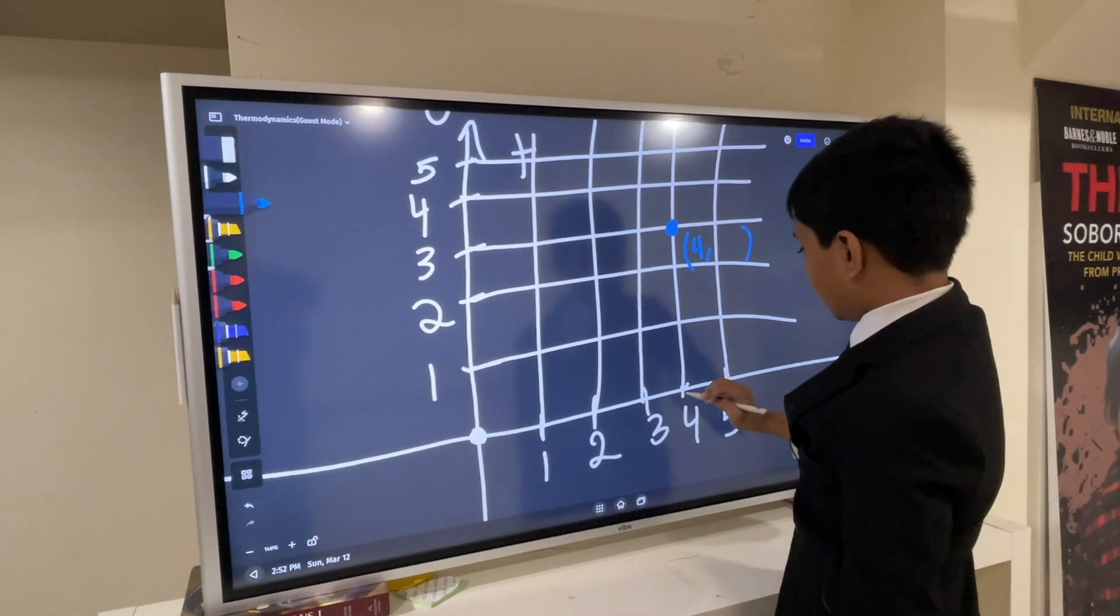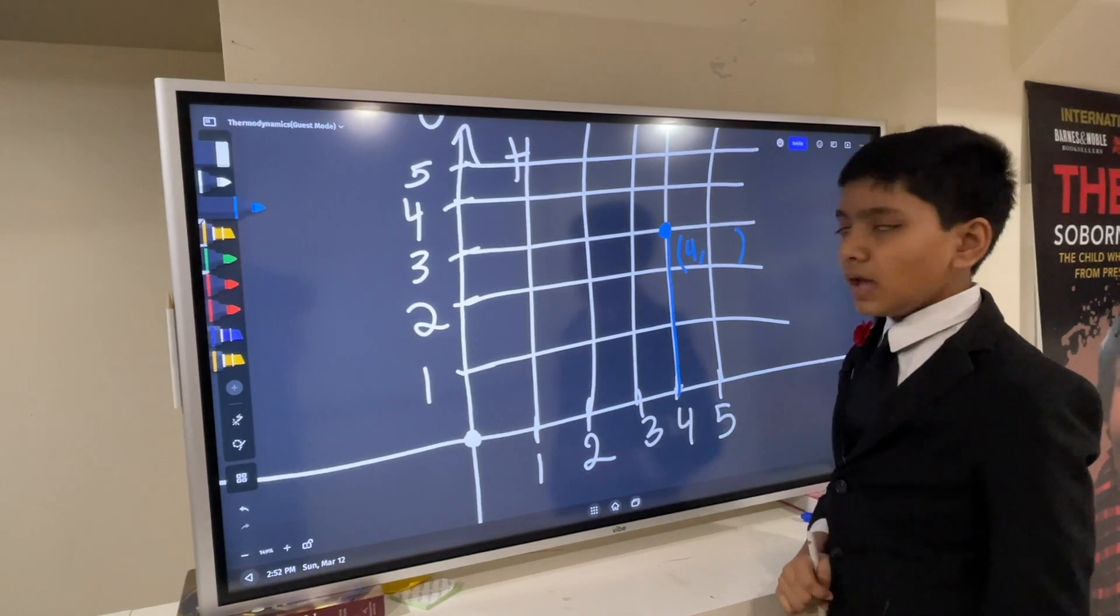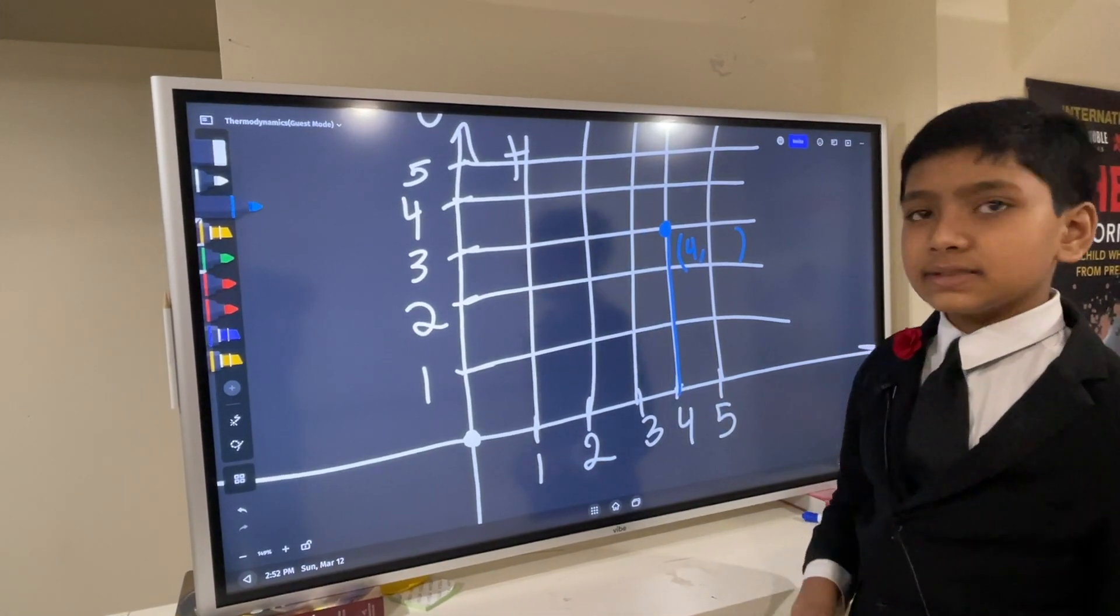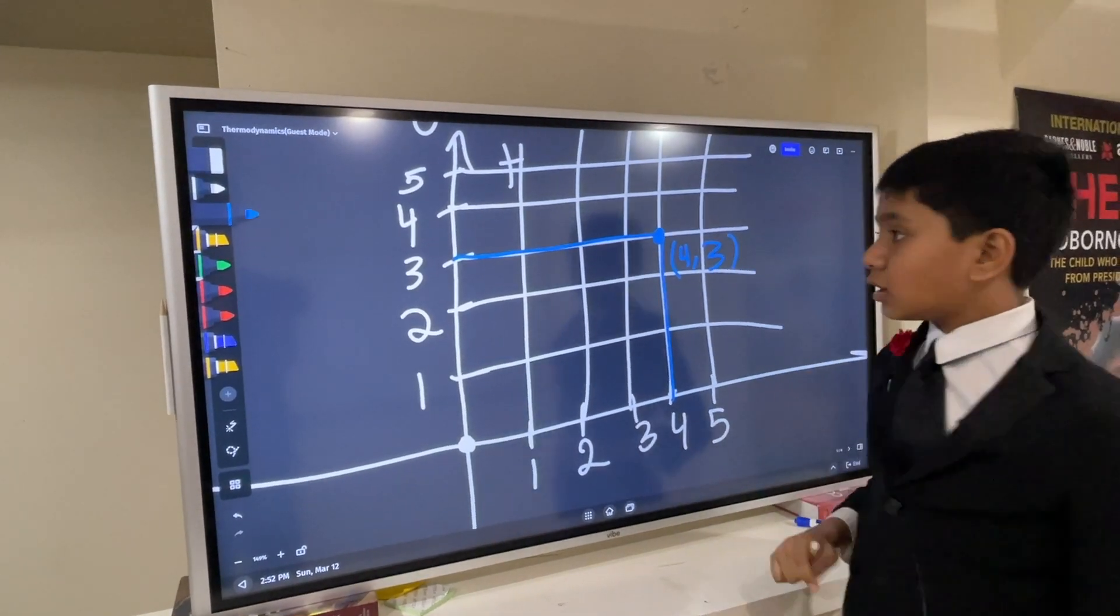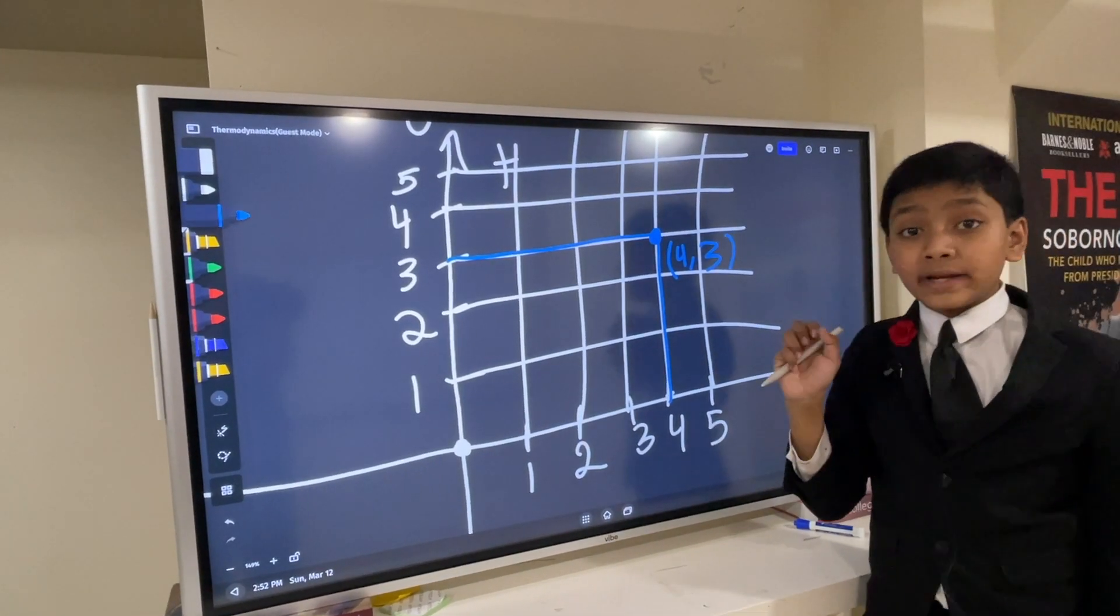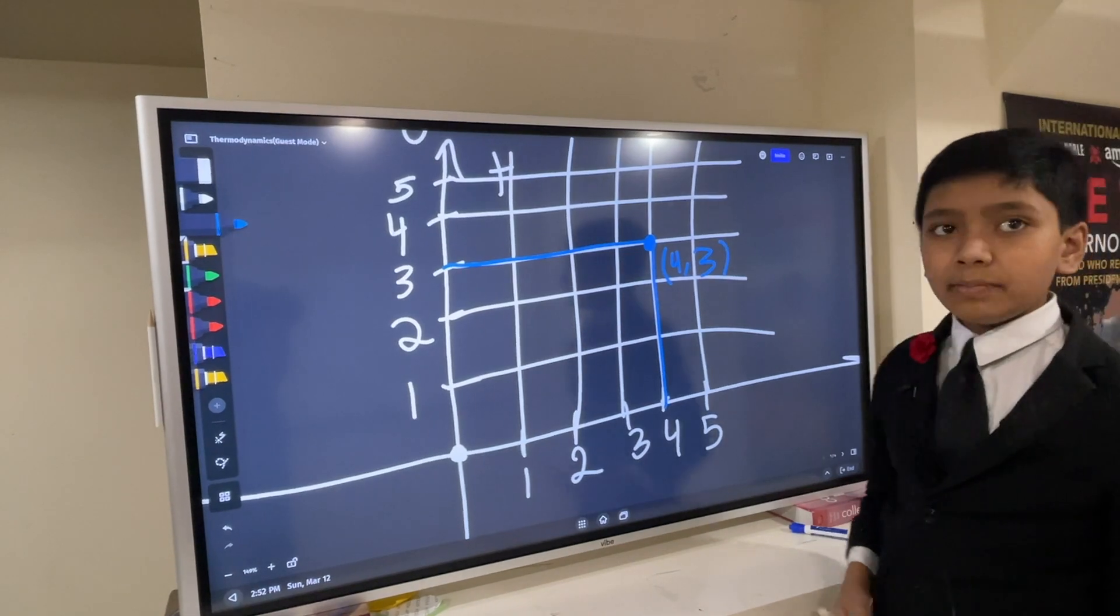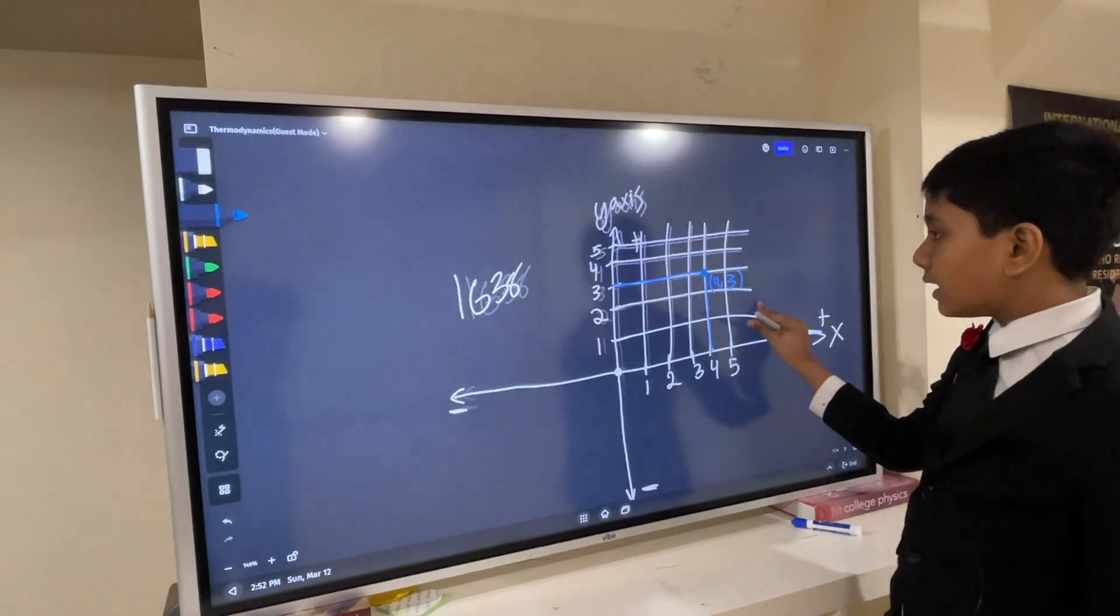Well, you would express its position by saying where it is on the x-axis. Where it is, in this case, it's at the number 4. And where it is on the y-axis, in this case, it's at the number 3. So that means that the coordinates of this point would be 4, 3.